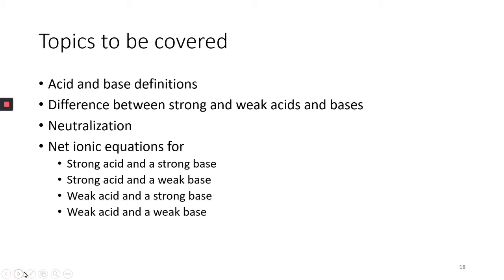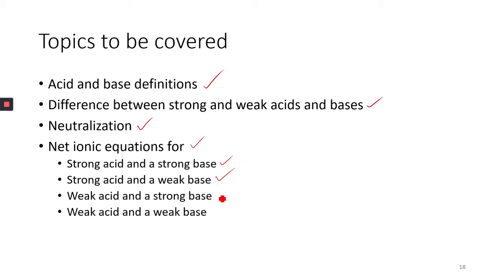Here are the topics we're going to be covering today. First, we're going to define what an acid and a base is, and the difference between a strong and a weak acid and base, and how when mixing these two together they neutralize each other, and how we write net ionic equations — for a strong acid and strong base, a strong acid and weak base, a weak acid and strong base, and a weak acid and weak base.